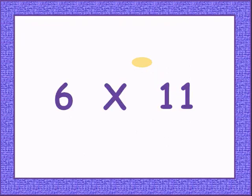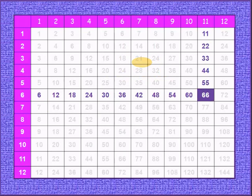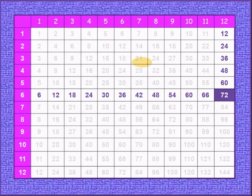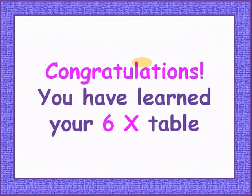Adding 6, 6 times 11 gives 66. Adding 6, 6 times 12 gives 72. That's it, you have learned your 6 times table.